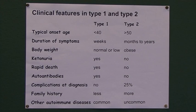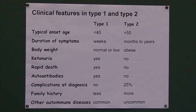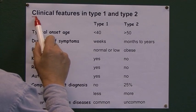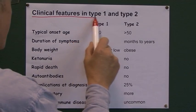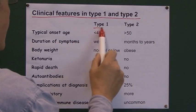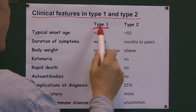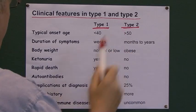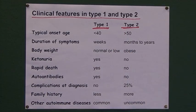Here's a useful table for helping us to diagnose type 1 and type 2 diabetes. We're looking at clinical features in type 1 and type 2 — this column is type 1 and this column is type 2.